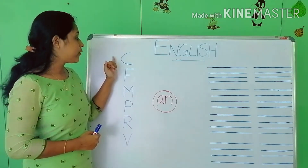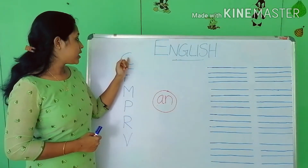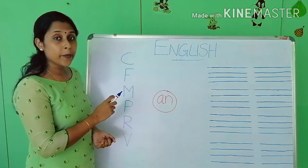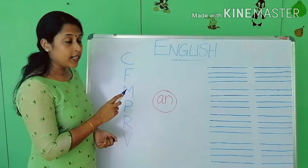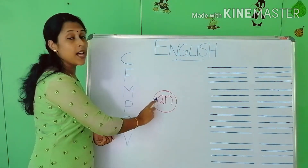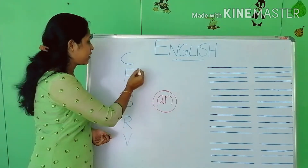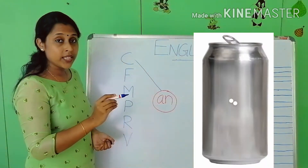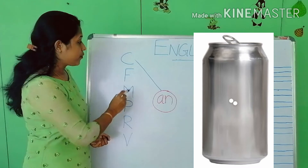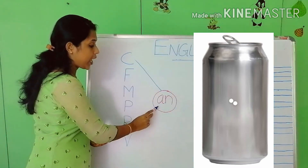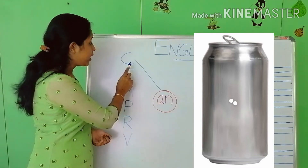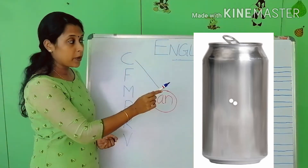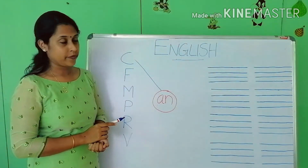First look at the first alphabet C. What is the sound of C? K. C and AN — K, AN — 'can'. When we write C-A-N, it makes the word 'can'. Look at the picture — this is a can.